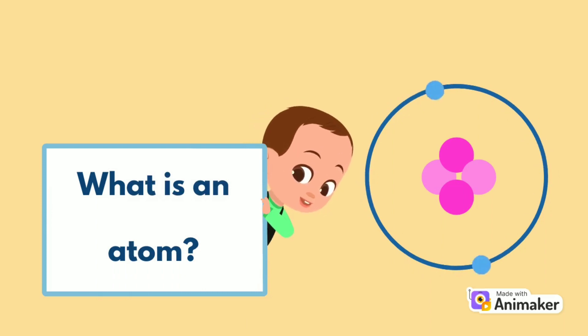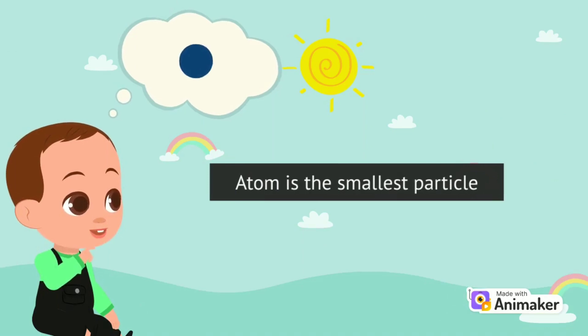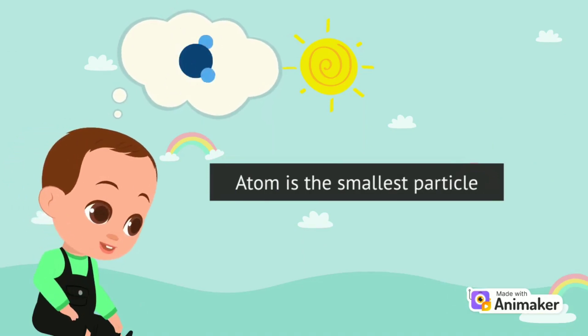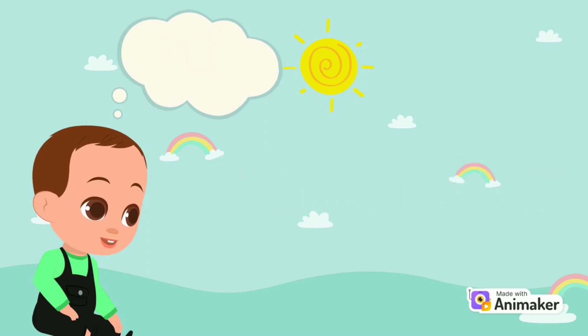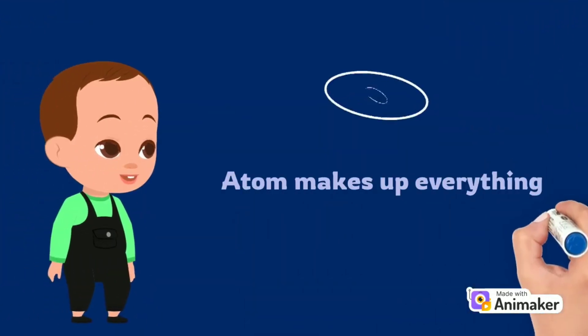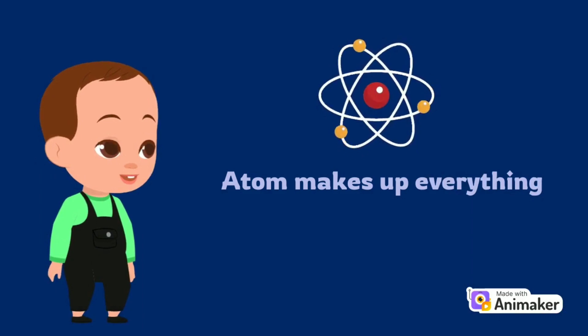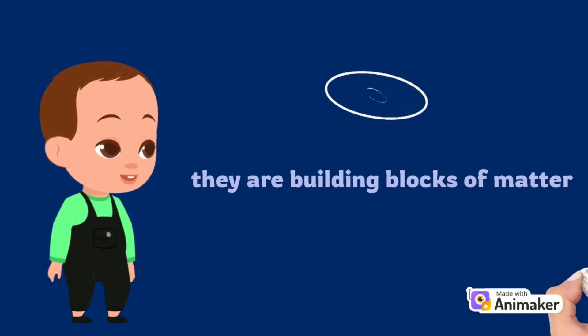What is an atom? Atom is the smallest particle and it is too small that we cannot see. Atom makes up everything. That means they are building blocks of matter.